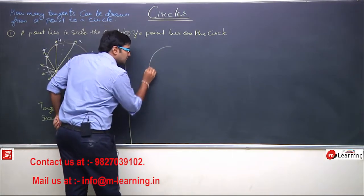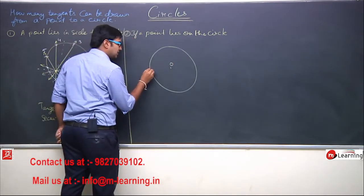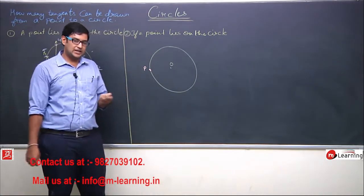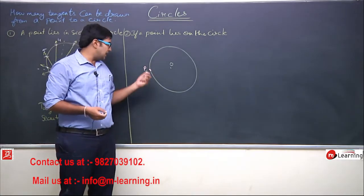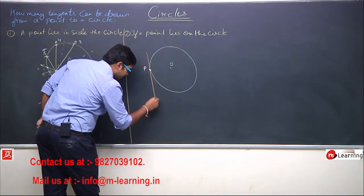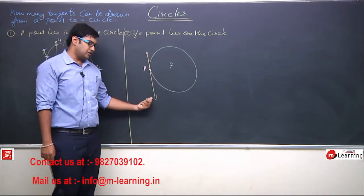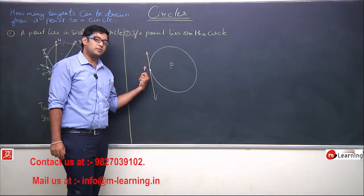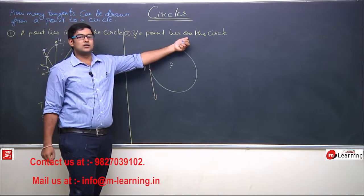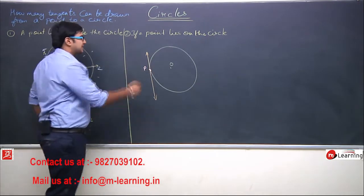Agar point circle ke upar hi lie kare, matlab kuch is tarah se — this is the circle, this is the center O, aur ek P point hai jo circle pe yahan par lie kar raha hai. Can I draw a tangent from this P point? Tangent kya hota hai? Ek aisa line jo circle ko sirf ek point pe touch kare. Toh agar mein is se koi line draw karta hoon toh woh line kuch is tarah se ban jayegi. Aap dekh sakte hain — this line is passing from point P only, and it is not intersecting the circle at any other point. So this line is basically a tangent.